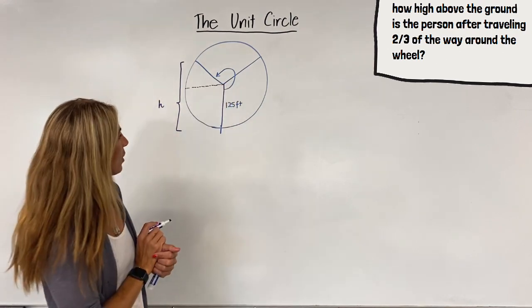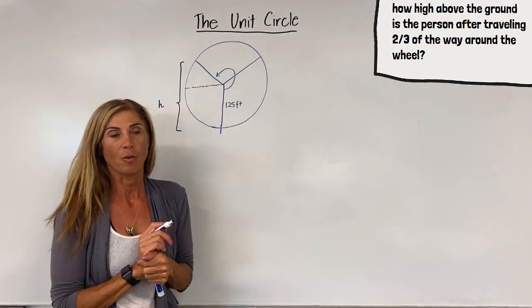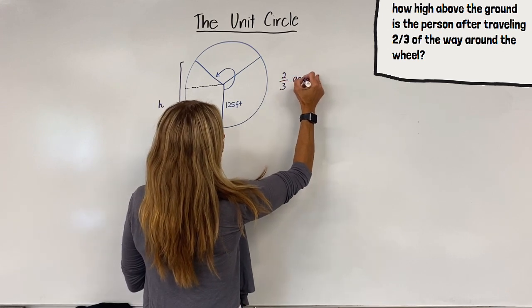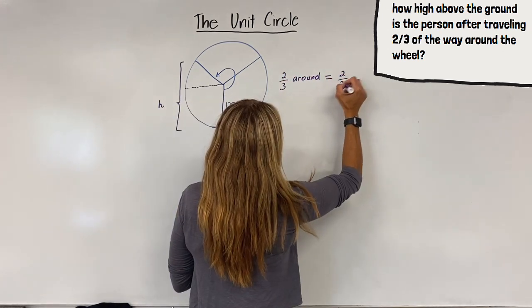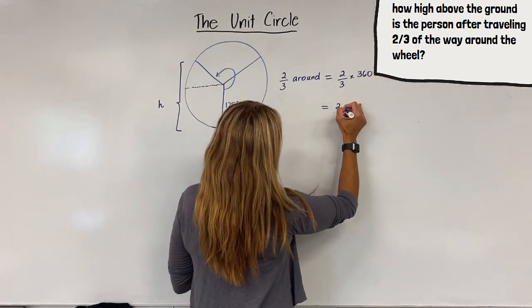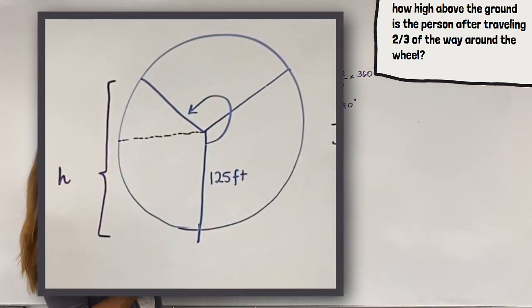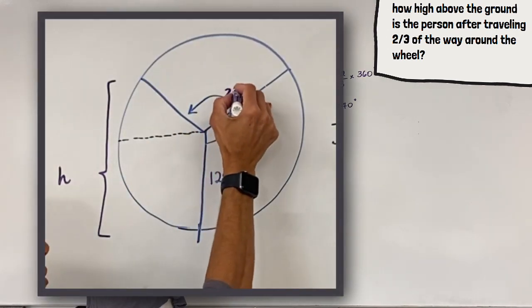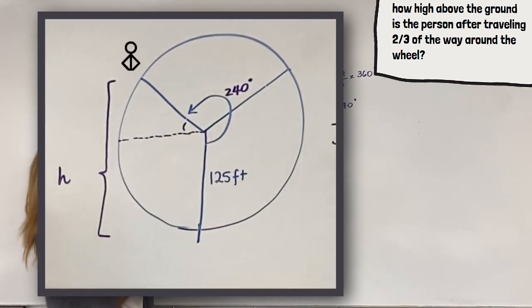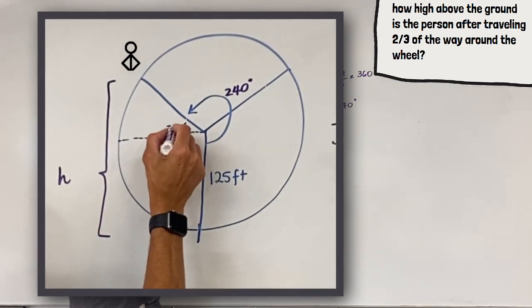And if we think about it, we have a horizontal line here. How many degrees is that going around two-thirds of the way? Two-thirds around the circle is equivalent to two-thirds of 360 degrees, which is 240 degrees. So right now we have a 240 degree angle going to the position of the person. That tells us that if it's 270 all the way around to the nine o'clock position, then this missing piece is 30 degrees.